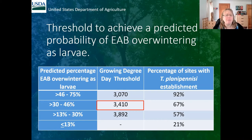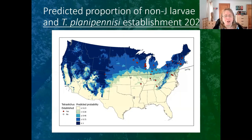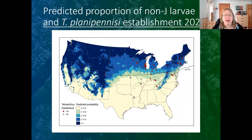Now I'll get to the part of the talk on the effects of climate change. For reference, this is the predicted proportion of non-J larvae and Tetrastichus establishment in 2020. I'd like you to focus on the 40th parallel as a reference line. Even below the 40th parallel, there's plenty of green area showing 14–30% probability of an EAB overwintering as a larva rather than a J larva.